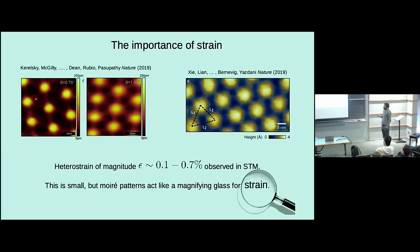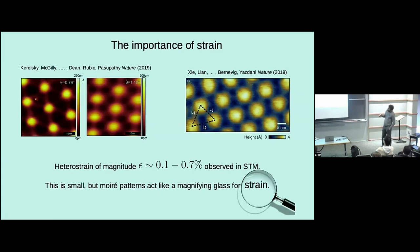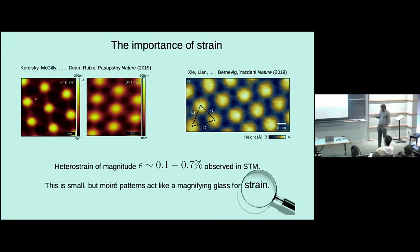Why do we focus on strain? First, strain is ubiquitous in STM experiments — you can just see it with the naked eye. These topographic images obtained in STM show the AA regions as bright spots, and you can see they do not form a nice regular triangular lattice — it's clearly distorted, and this is the effect of strain. If you back out the amount of strain needed to produce this deformation, you find it's actually pretty small — a strain magnitude of between 0.1 and 0.7% in the monolayers. Normally we wouldn't worry about that, but here such small strains can be important because this moiré pattern literally is a magnifying glass for the strain — very small on the atomic scale but magnified to the moiré scale.